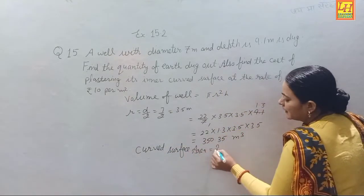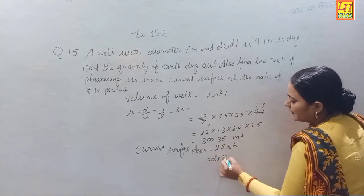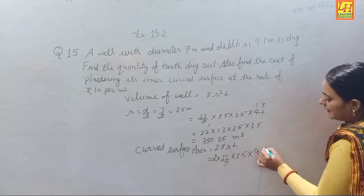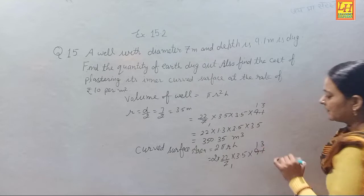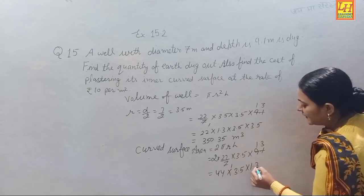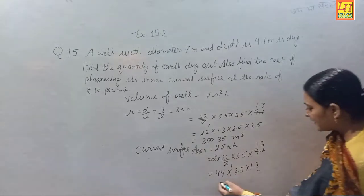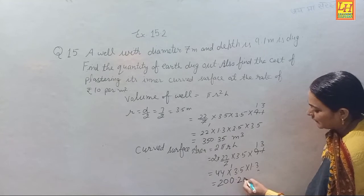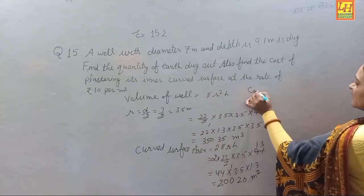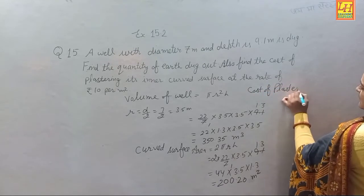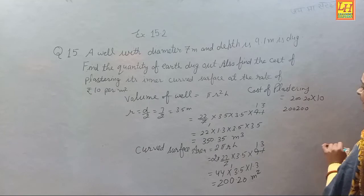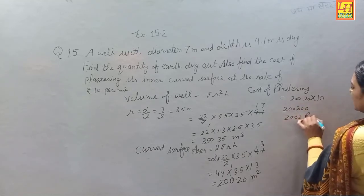Curved surface area = 2πrh = 2 × (22/7) × 3.5 × 9.1 = 200.20 square meters. Cost of plastering = 200.20 × 10 = ₹2002.